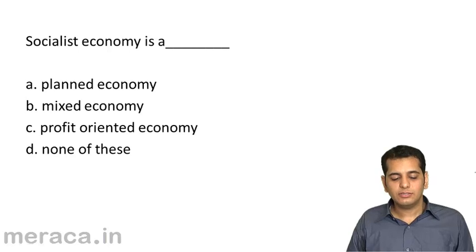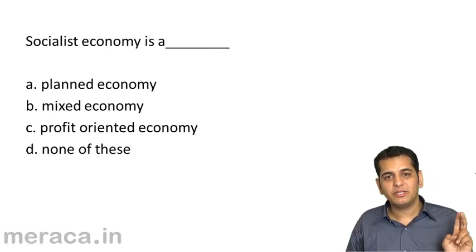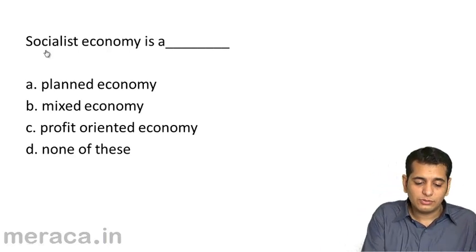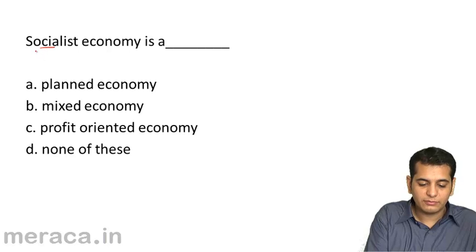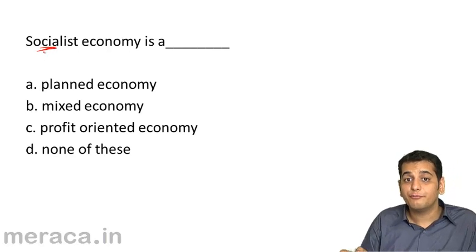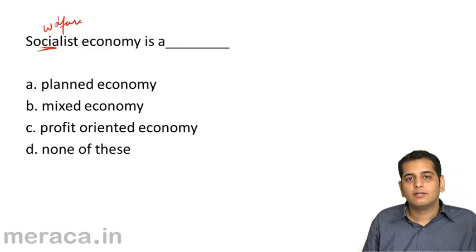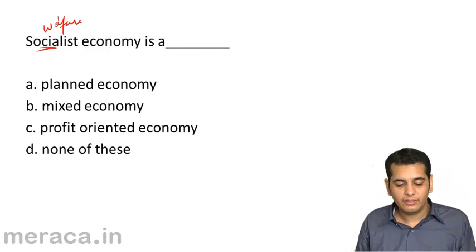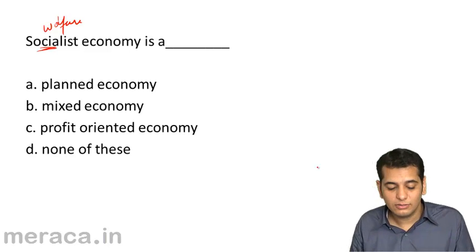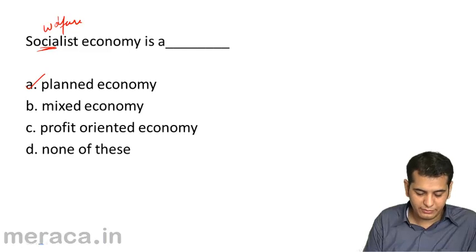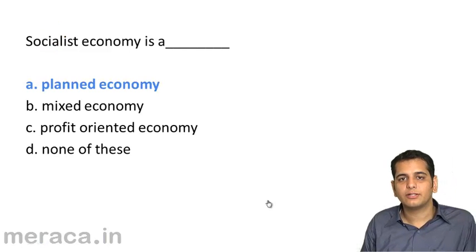A socialist economy is a — a planned economy, b — mixed economy, c — profit oriented economy, or d — none of the above. A socialist economy is a welfare oriented economy, and welfare is achieved through central planning. So it is a planned economy — that's the right answer.